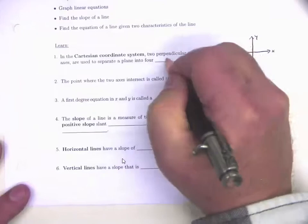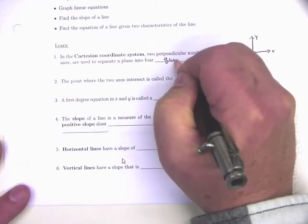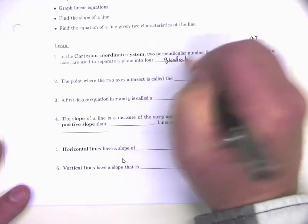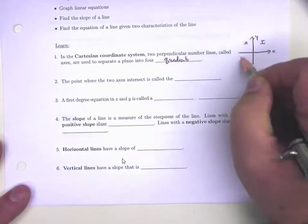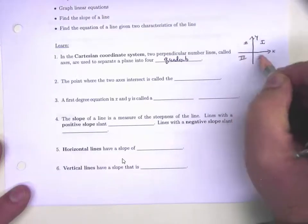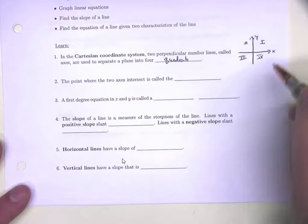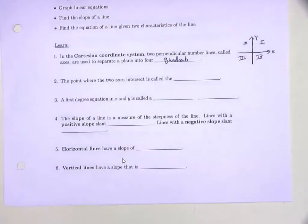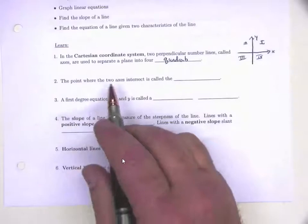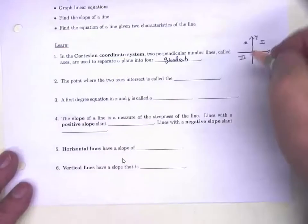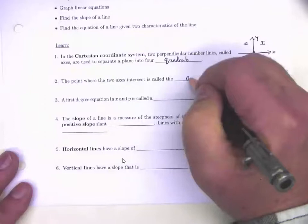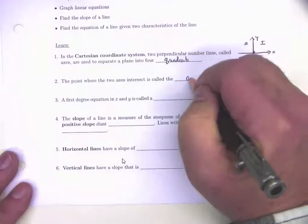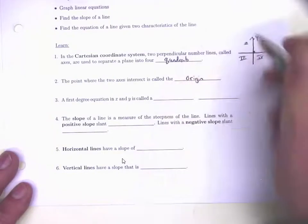Those four regions are called quadrants, and they're labeled quadrant one, quadrant two, quadrant three, and quadrant four — you go counterclockwise. The point where the two axes intersect is called the origin.